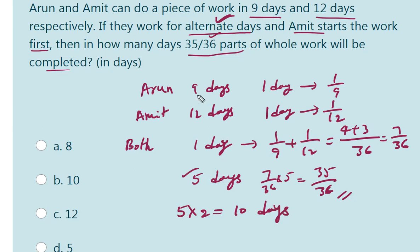Because in the question, they have given as alternative days. If both will work in alternative days, they need 5 days. So, how many total days required? 5 into 2. That is 10 days are needed to complete their work. So, answer is 10.